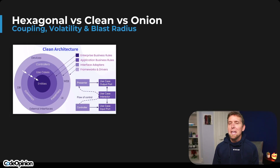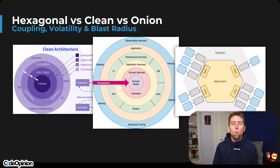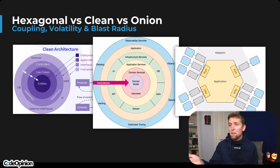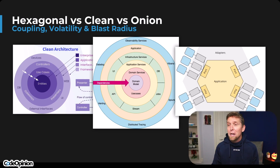After that, it doesn't matter which one of these diagrams you pick. Whether we're thinking about a diagram of clean architecture, onion architecture, hexagonal, or ports and adapters, they're all really just trying to achieve the same thing, which these diagrams kind of illustrate — which is the direction of dependencies and isolating the core.